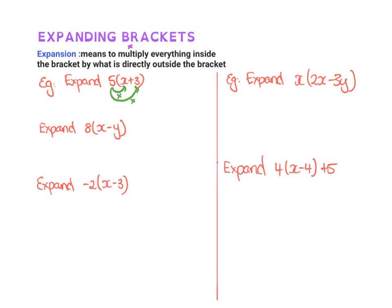So if we do that, we'd have 5 times x plus 5 times 3. Now we can write 5 times x like 5x and then 5 times 3 is 15. So there we expand.